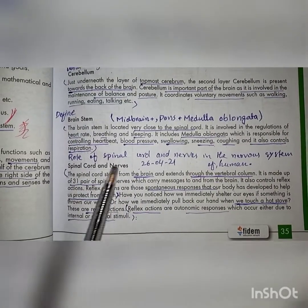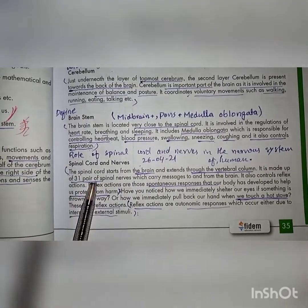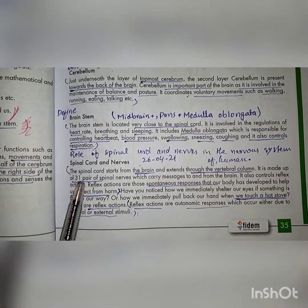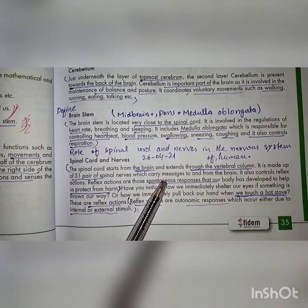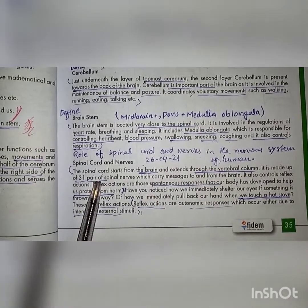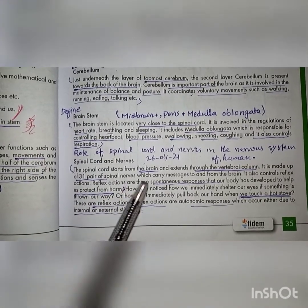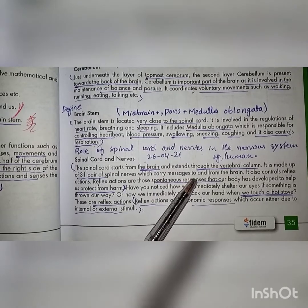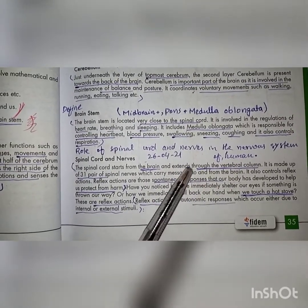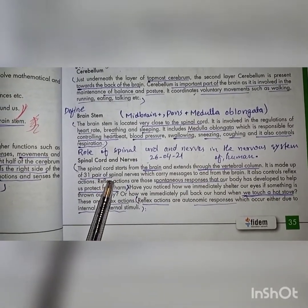Spinal Cord and Nerves — the spinal cord starts from the brain and extends to the vertebral column. It is made up of 31 pairs of spinal nerves which carry messages towards the brain and towards the body — that is, from the body to the brain and from the brain to the body.